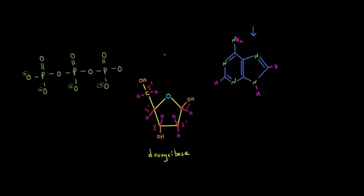And then the next molecule in DNA is a nitrogen base. And the nitrogen base you're looking at here is actually adenine. You may have heard of the molecule ATP, adenosine triphosphate, and that also has an adenine in it.